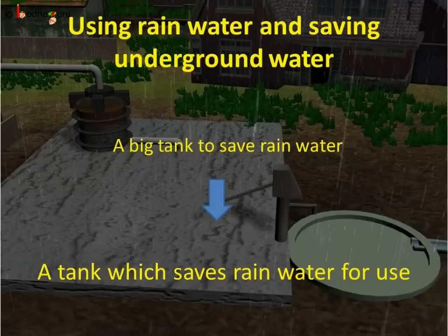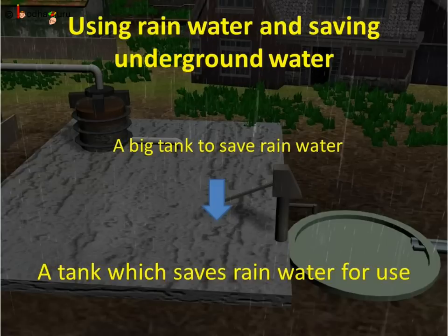This rain water can be used for anything, even for drinking after a little purification. When people save and use rain water, they don't need to pump out too much water from underground using a tube well. So underground water is saved and can be used when there is no rain — in dry seasons like summer or even during drought.